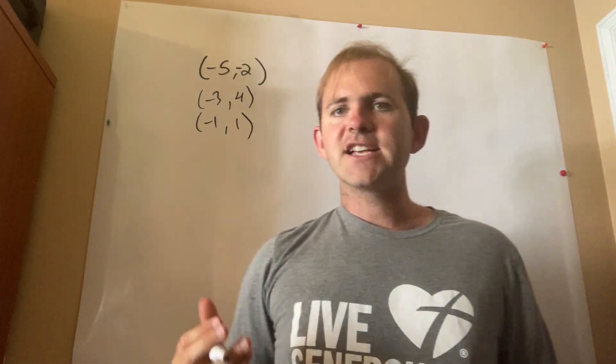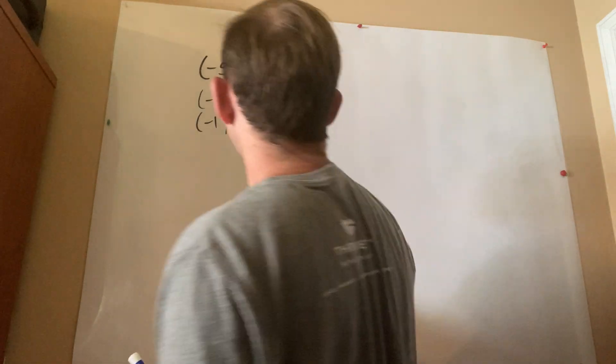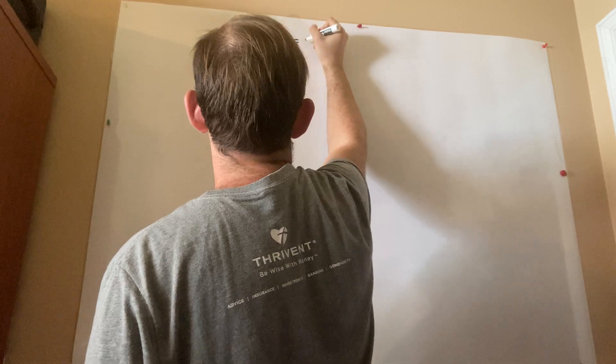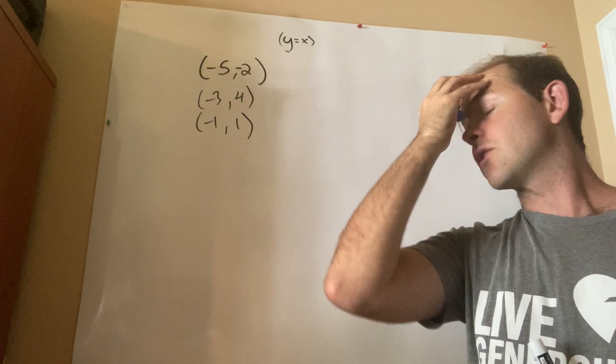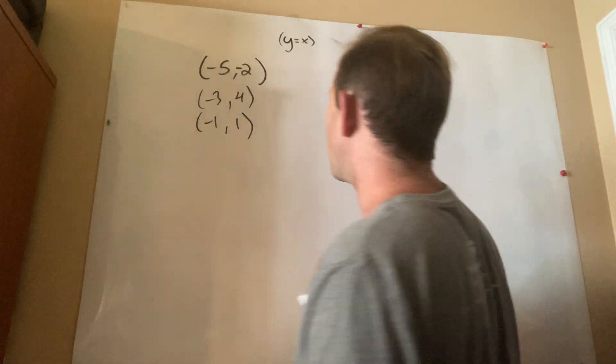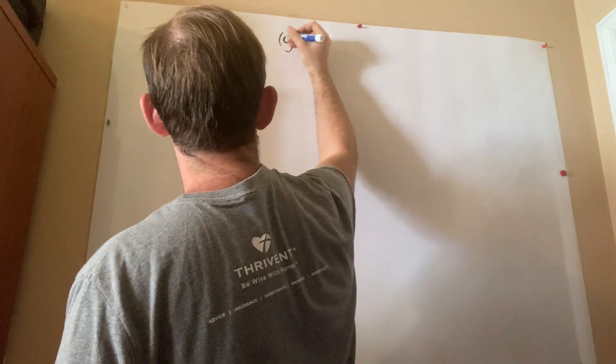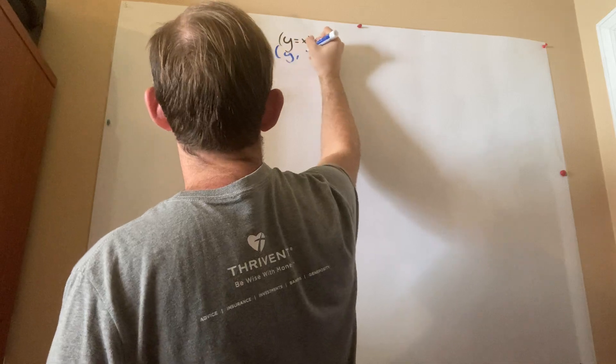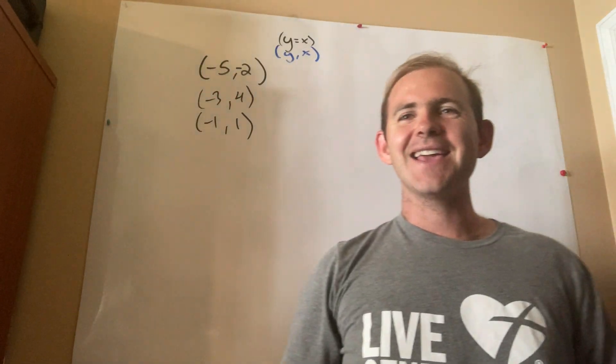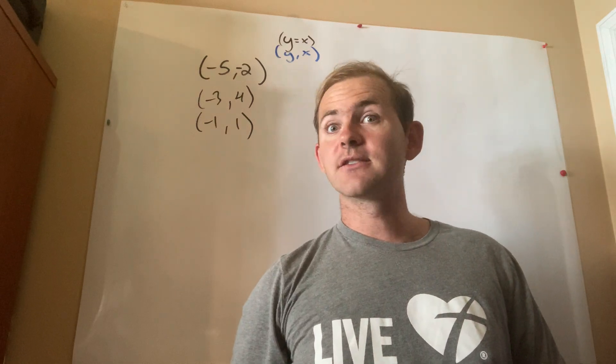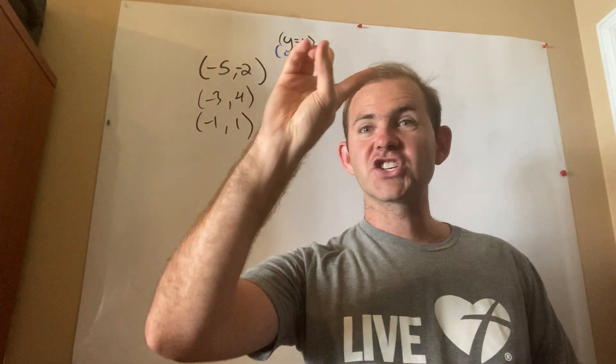Okay, and they asked me to do a reflection over the line y equals x. Let me write that down. Y equals x, right? Okay, so the first thing I want to do is write down my coordinate rule. And my coordinate rule for this is what I call the switch.